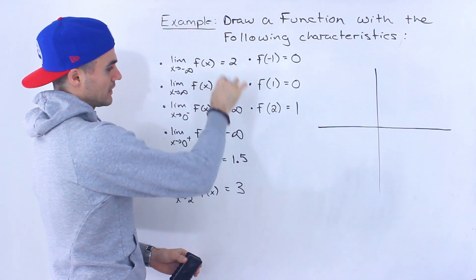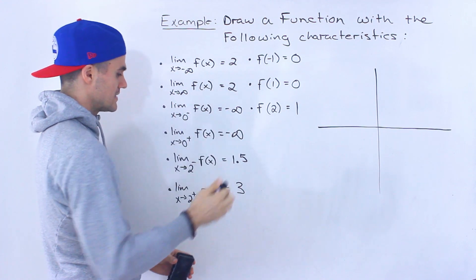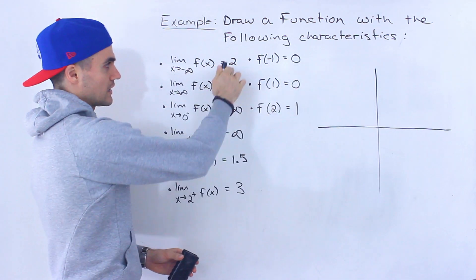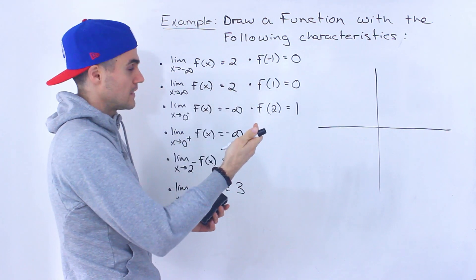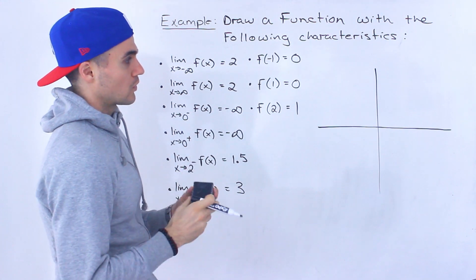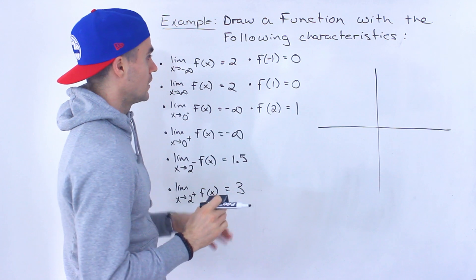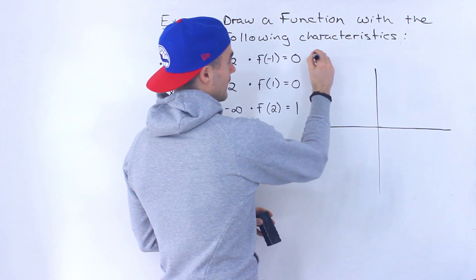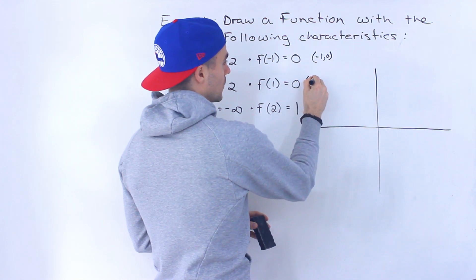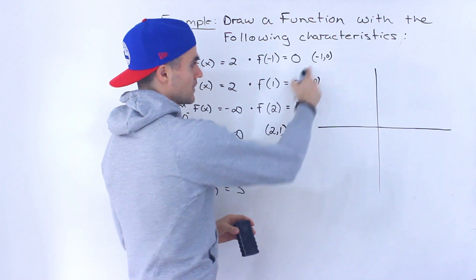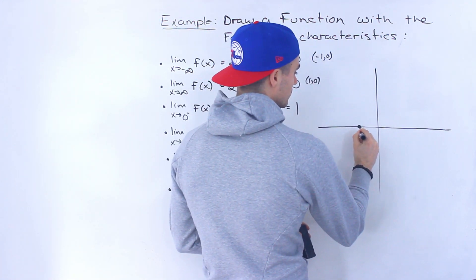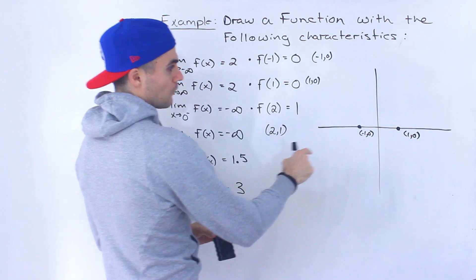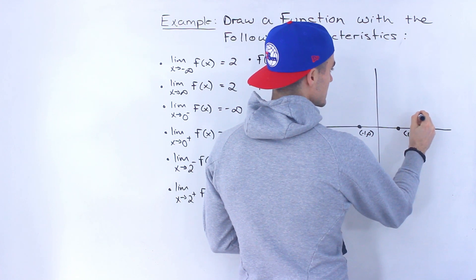With certain limits there's not too much flexibility, but notice how for limits as x approaches negative or positive infinity equaling two, we know the horizontal asymptote is at two, but we might have flexibility in whether we're approaching it from the bottom or the top. The fixed points are: f(-1) = 0, which is the point (-1, 0); f(1) = 0, which is the point (1, 0); and f(2) = 1, which is the point (2, 1). So (-1, 0) is the x-intercept over here, then (1, 0) over here, and (2, 1) about here.